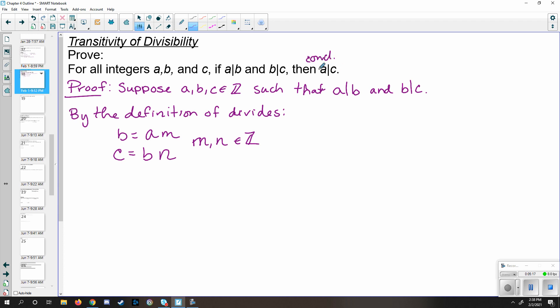So can we write c equal to a times something else? Well, we have an equation for c. We've got an equation for b, and you'll notice that c is in terms of b. Use substitution here. So if we replace b with am, so in other words, c equals bn, which is equal to am times n. We're allowed to rewrite this. It's one of our algebraic properties.